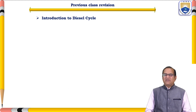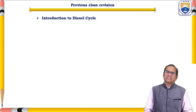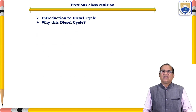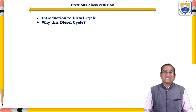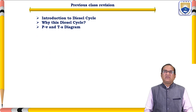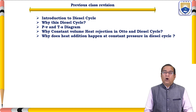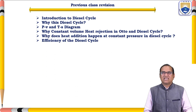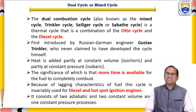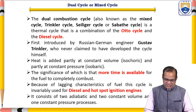In the previous lecture I discussed the diesel cycle: why this diesel cycle is required, the PV and TS diagram of the diesel cycle, why constant volume heat rejection occurs in both the Otto and diesel cycle, why heat addition happens at constant pressure in the diesel cycle, and the efficiency of the diesel cycle.